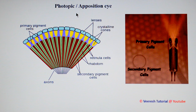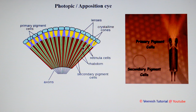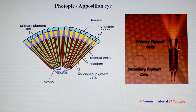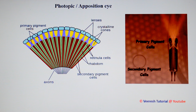There are two types of ommatidium in insects. In diurnal insects, the ommatidium is referred to as a photopic or apposition eye, because the base of the crystalline cone is directly opposite the rhabdom. When light enters the crystalline cone, it falls directly on the rhabdom. Light rays entering at an angle are absorbed by the primary pigmentary cells on either side of the crystalline cone, preventing light from entering adjacent ommatidia. In photopic eyes, each ommatidium serves as an individual visual unit, producing high-resolution distinct images.